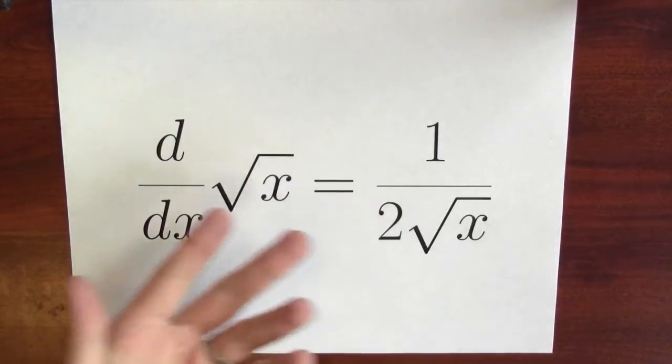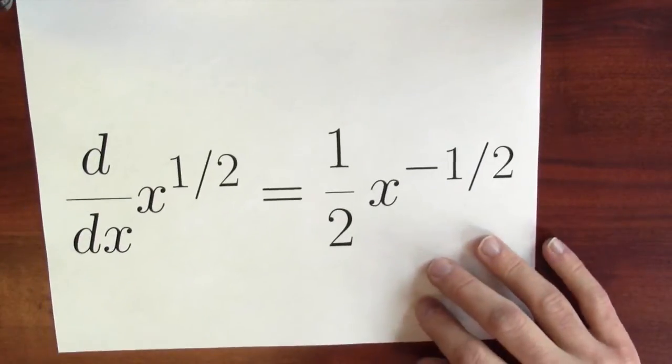This is really the same as this. It's just written here with the square root symbol instead of with the exponents. We can use this derivative rule to help explain certain numerological coincidences.